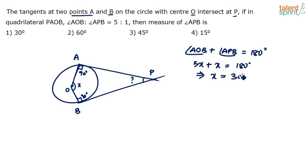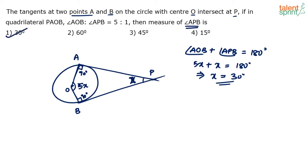So 6x equals 180, which means x equals 30 degrees. Angle APB is x, which is 30 degrees — that's option one. If asked for angle AOB, that would be 5x, which equals 150 degrees. This is a straightforward circles question and you should not be making any mistakes on it in the exam.